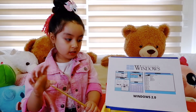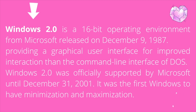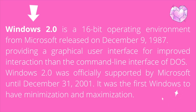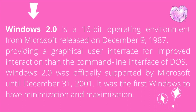The second one is Windows 2.0. Windows 2.0 is a 16-bit operating environment from Microsoft, released on December 9, 1987, providing a graphical user interface for improved interaction than the command line interface of DOS. Windows 2.0 was officially supported by Microsoft until December 31, 2001. It was the first window to have minimization and maximization.